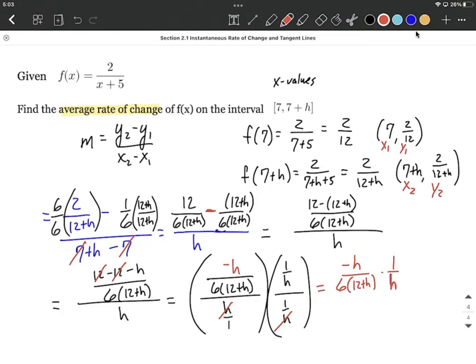That process that I did by multiplying by 1 over h over 1 over h, sometimes students think of this as keep change flip, if that helps out as you're doing this. Multiplying by h in the numerator and h in the denominator, we'll get to cancel each other out. So our final answer here is going to be negative 1 over 6 times 12 plus h. We could distribute that 6 in the denominator, but that's a pretty good final answer. Negative 1 divided by 6 multiplied by the quantity 12 plus h. I hope this helps out. It's okay that it still has an h in the denominator. Good luck as you're working through these problems.